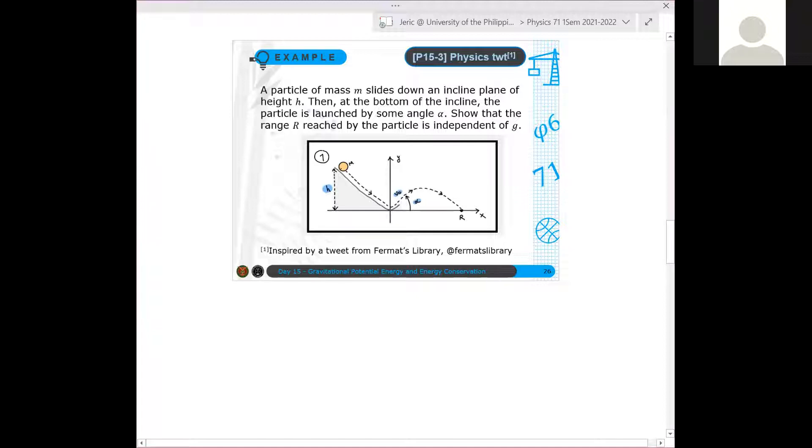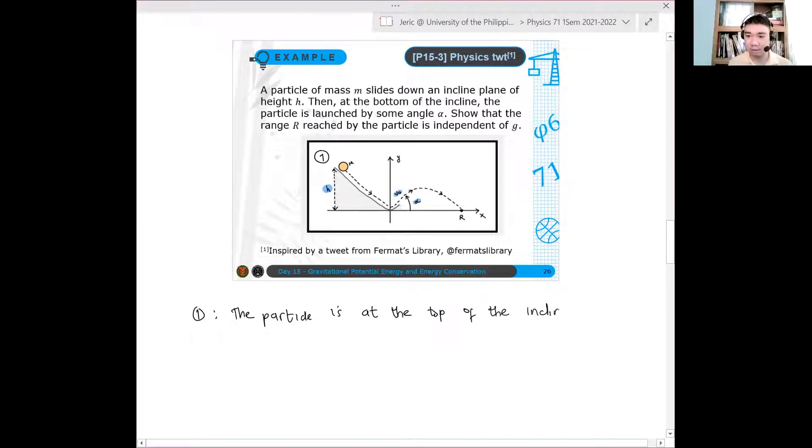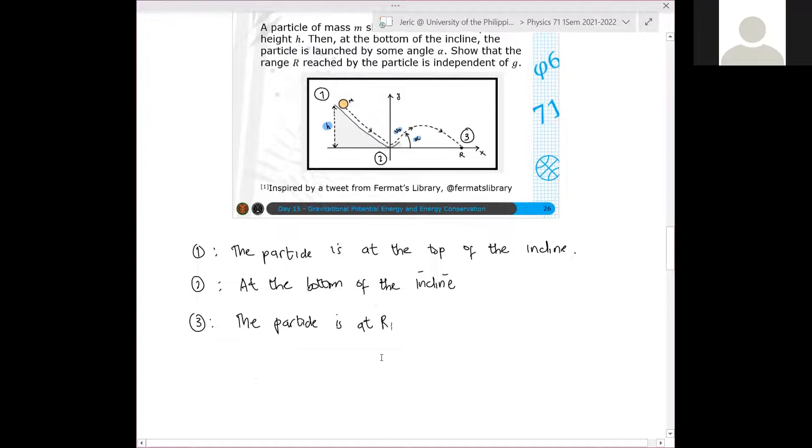Kasi yung first state is that the particle is at the incline, at the top of the incline. And then state two is at the bottom of the incline. And then state three is the particle is at R. So this is state. Clear ba tayo doon? Clear ba tayo rito?